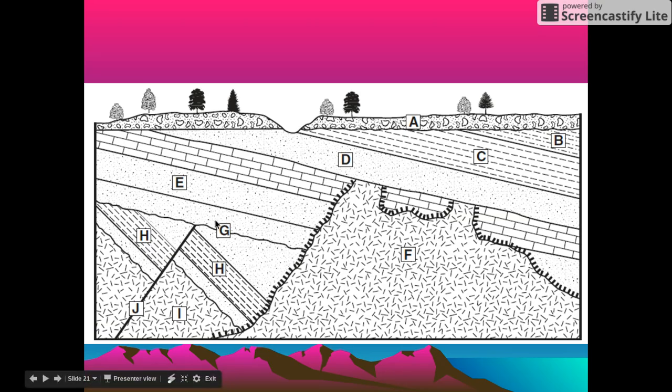And then G happened. This got eroded. And then E came on top. And now we're going to look at D and F. Which one of those came first?